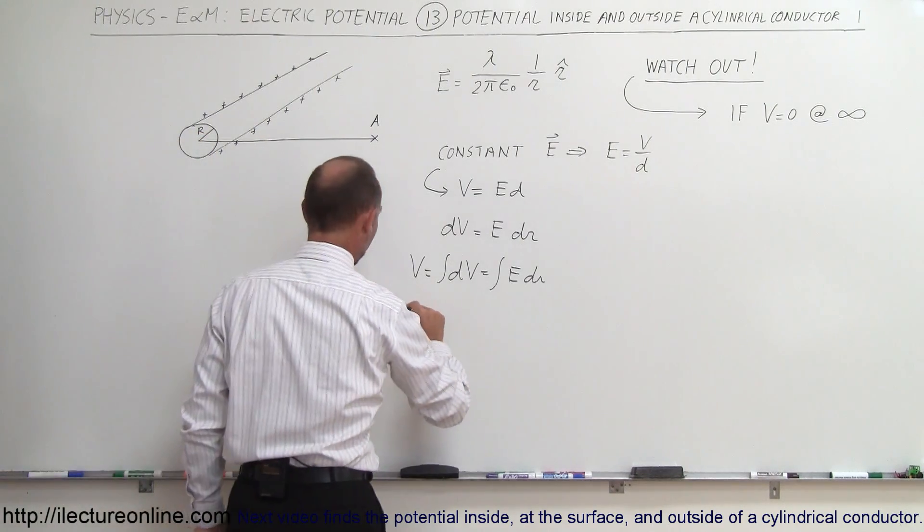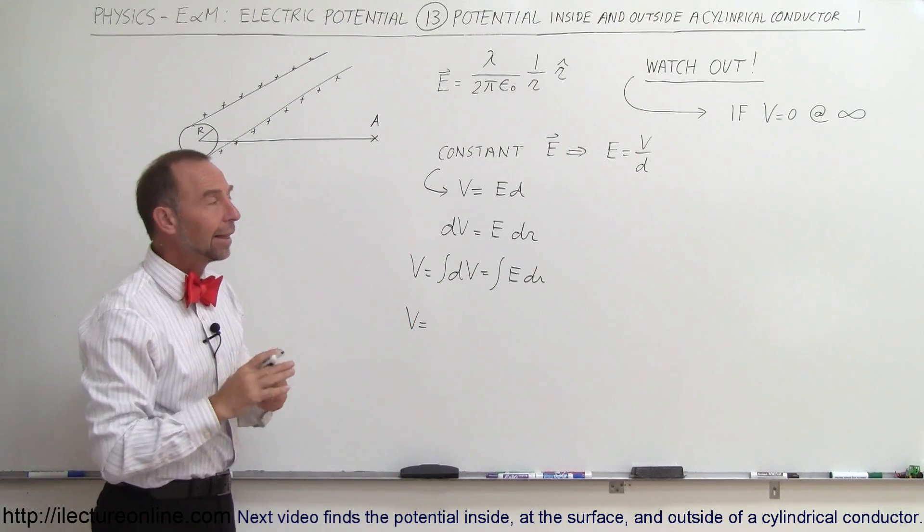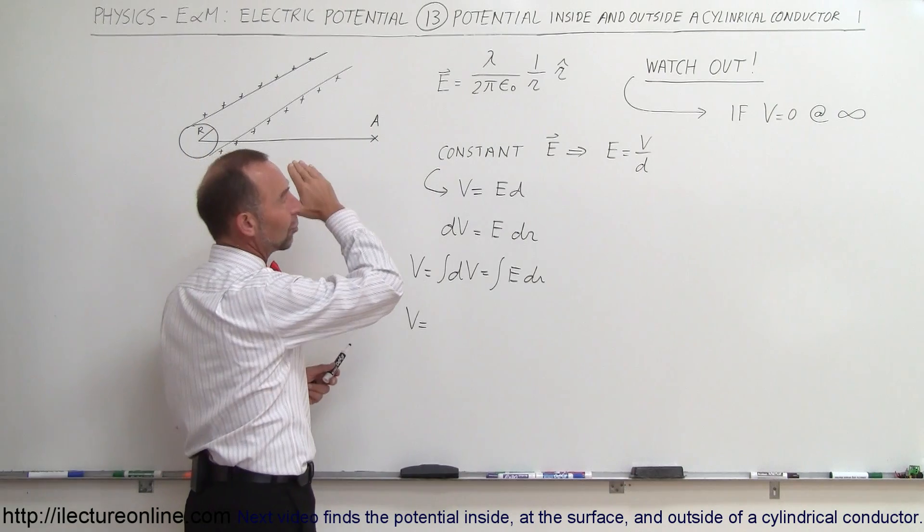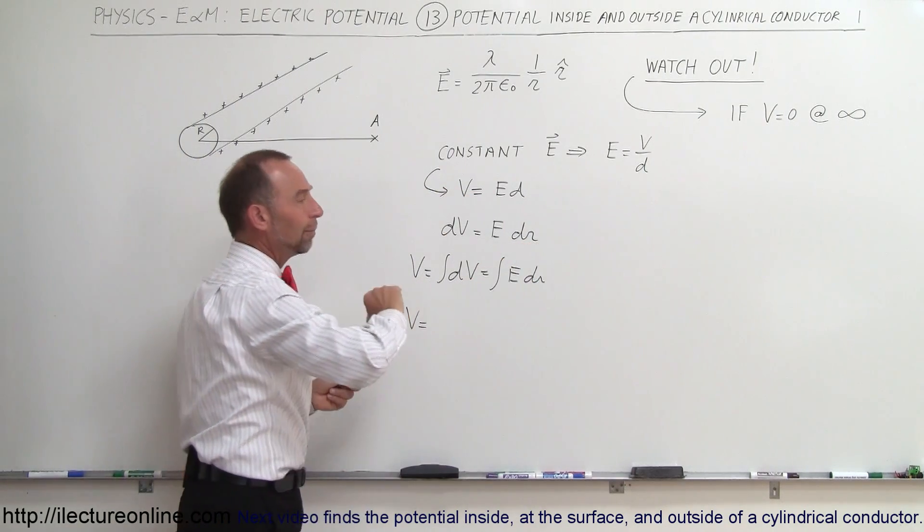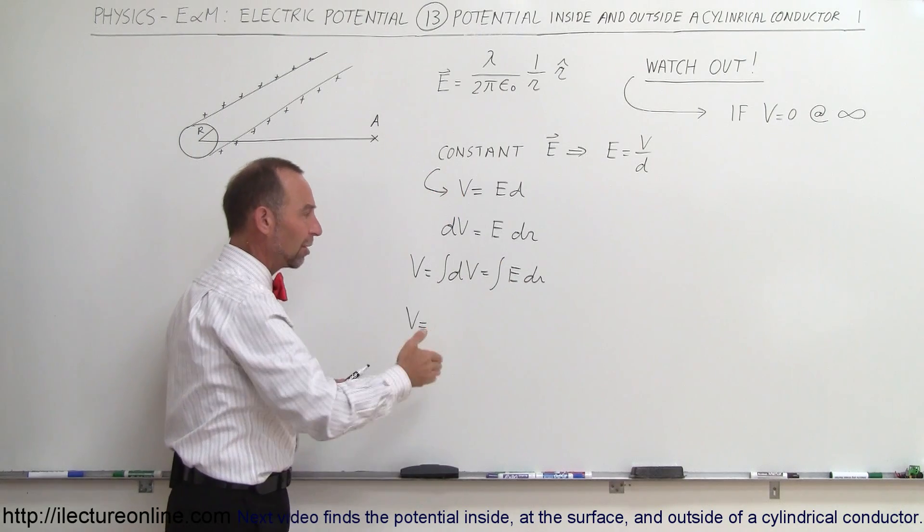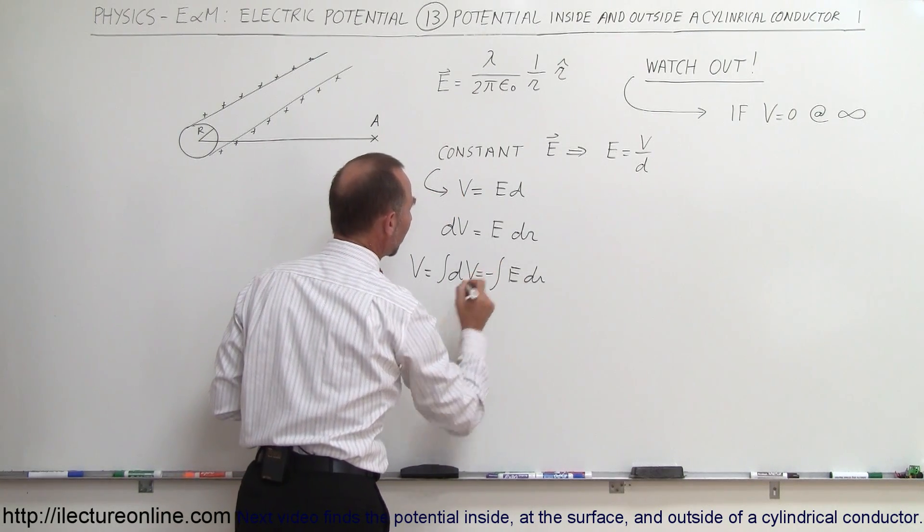So let's try that. So V is equal to, now remember, we also have to keep in mind that the potential decreases as we go farther away from the charge, and therefore, as r increases, the potential decreases, so we actually need a negative sign in there to compensate for that.